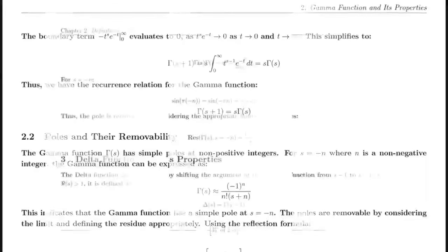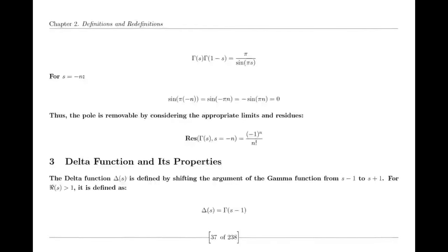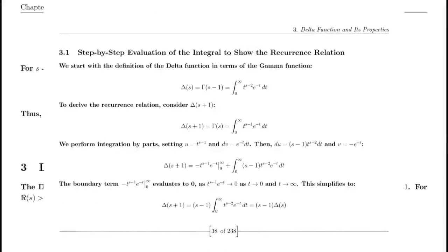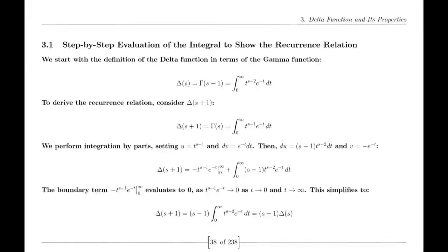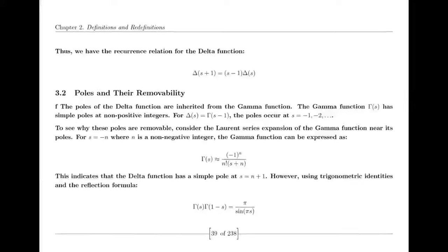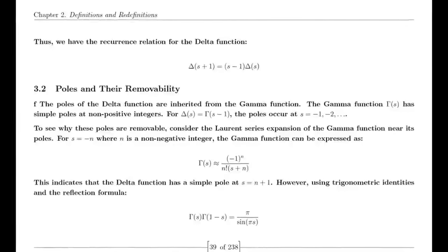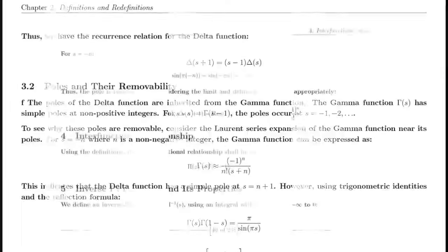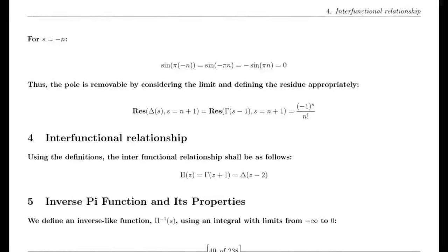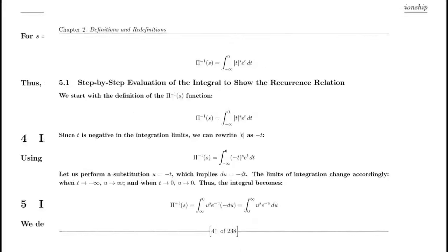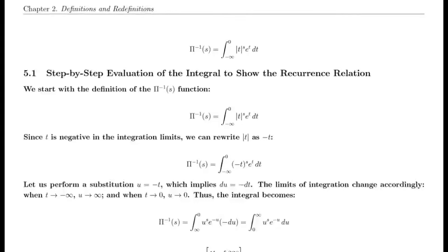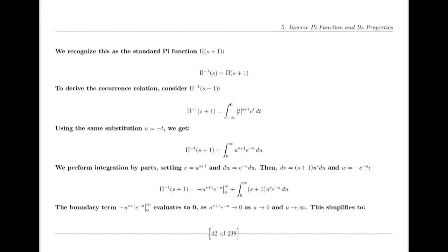Undeterred, Suraj took to social media, sharing more videos where he explained his ideas in layman's terms. He spoke about the fundamental theorem of arithmetic, illustrating how every integer could be uniquely factored into primes. He connected this concept to the behavior of the zeta function, arguing that the distribution of primes could be understood through basic algebraic relationships. Despite his best efforts, the mathematical elite remained divided — some applauded his courage, while others dismissed his proof as naive. This discord fueled online debates, with many mathematicians posting lengthy critiques focusing on what they considered flaws in Suraj's methodology.